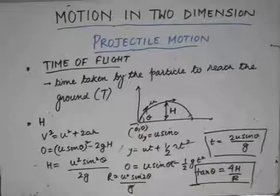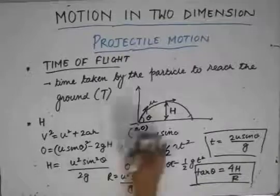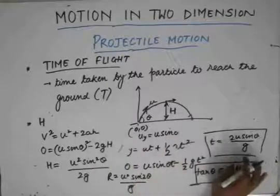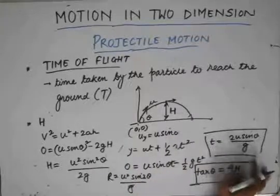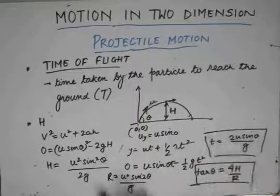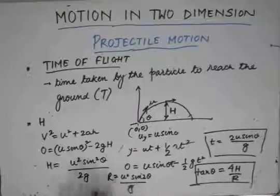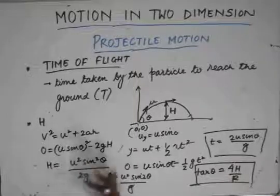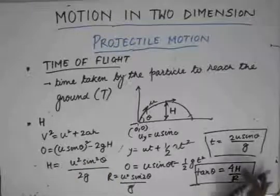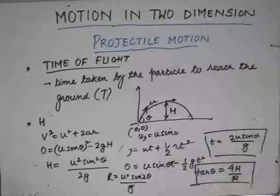To summarize, we have found the time of flight T = 2u sin θ / g, the range R = u² sin 2θ / g, and the maximum height H = u² sin² θ / 2g. We have also derived the relation tan θ = 4H / R, correlating the launch angle with H and R.